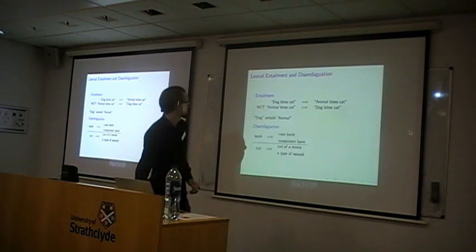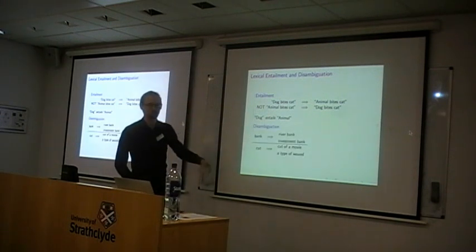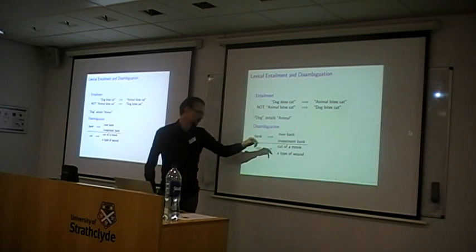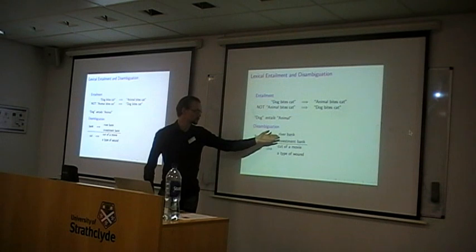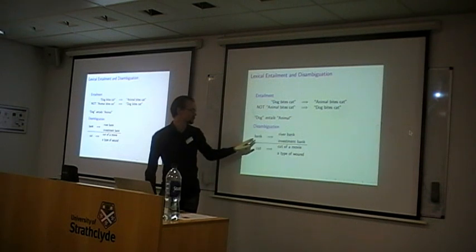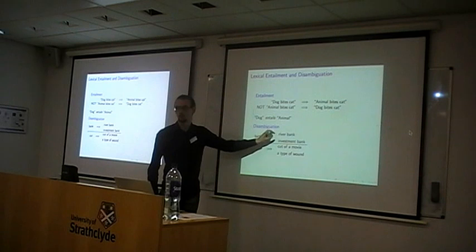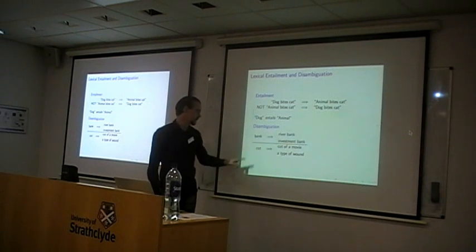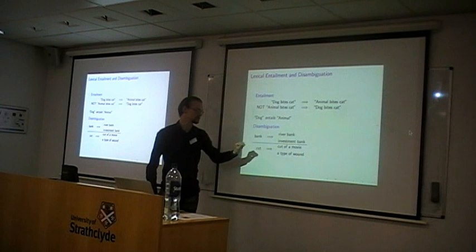Related to this is disimplication. You could say that 'bank' could mean 'river bank' or 'investment bank.' Then you also say that these words, which are less ambiguous versions than 'bank,' contain strictly more information. And again with the word 'cut' — cut of a movie or type of food — again these words contain more information.